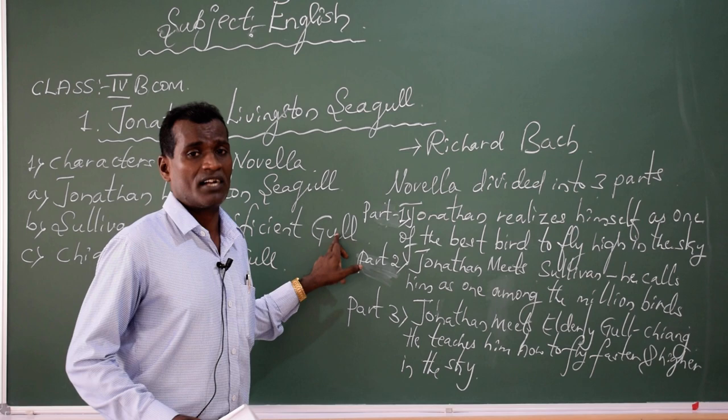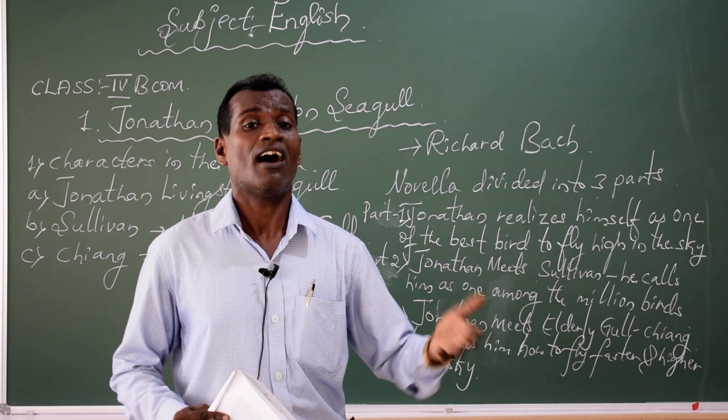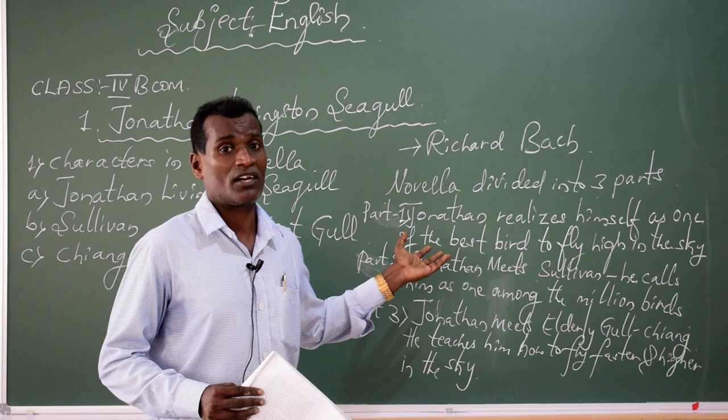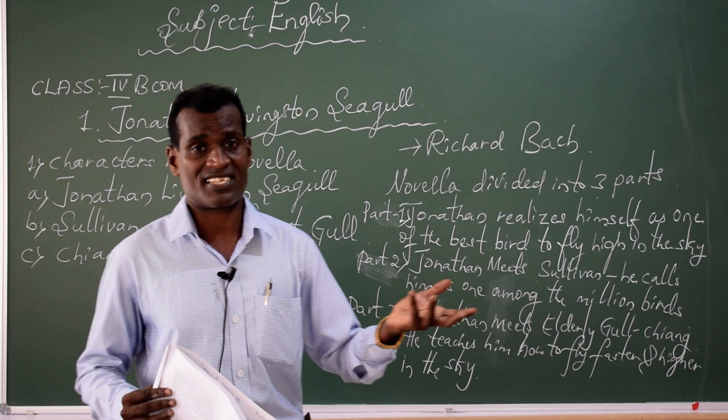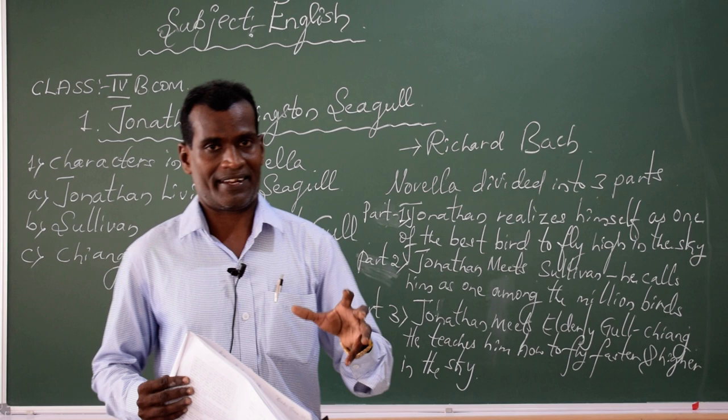That is why every bird in the flock is going to appreciate and admire, and everybody is going to talk about Jonathan Livingstone Seagull — because it is one of the best and extraordinary birds that flies so high in the sky and also flies very fast and faster, in order to catch prey.